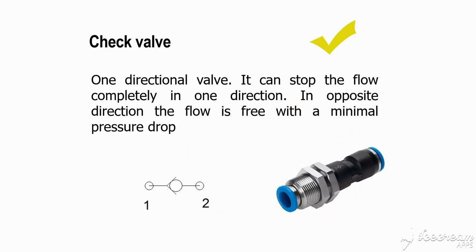A check valve is a one-directional valve. It stops flow completely in one direction while allowing free flow with minimal pressure drop in the opposite direction. Air can pass from port 1 to port 2, pushing a ball open, but when applied from port 2 the ball locks and blocks reverse flow. This is why it is called a one-directional or check valve.